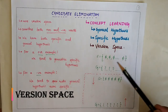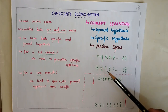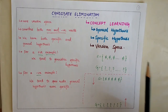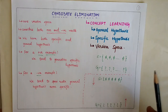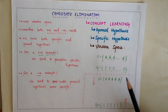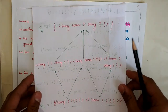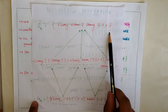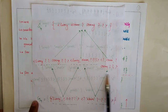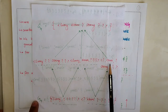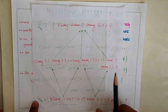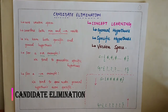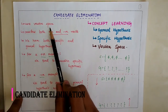Version space is intermediate of both specific as well as general hypothesis. It not only returns one hypothesis, but instead a set of all possible hypotheses based on the training dataset. This general hypothesis and specific hypothesis form the boundaries, and the intermediate set of hypotheses in between is our version space.